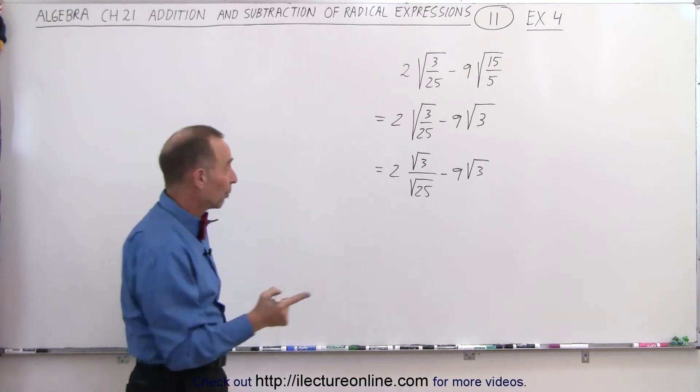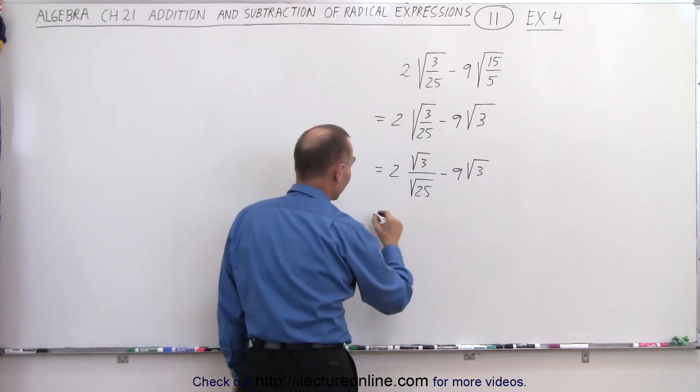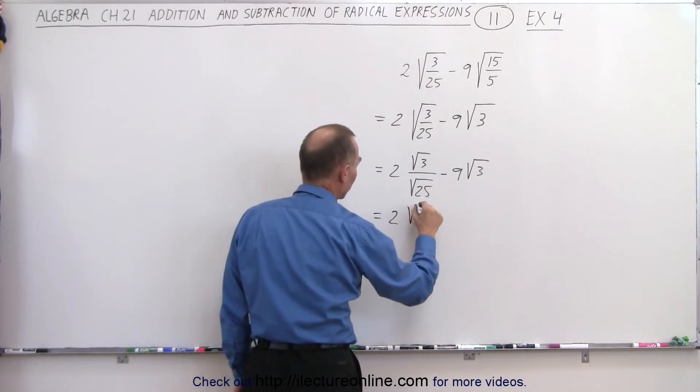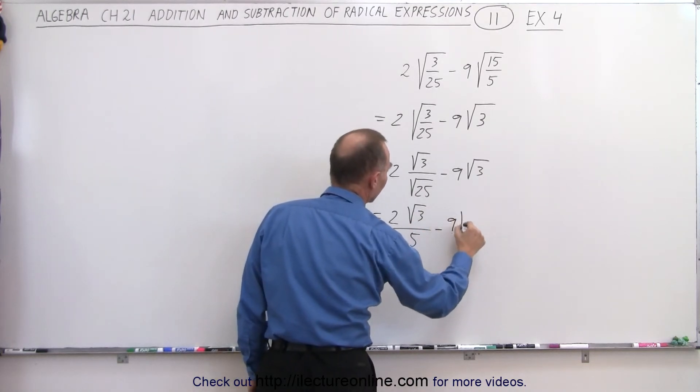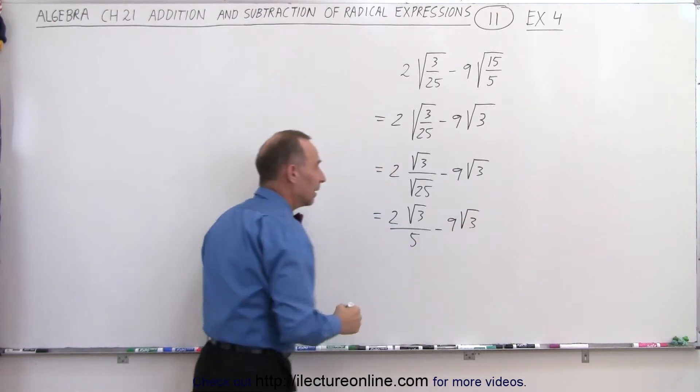And then you realize, well, √25 is simply 5, so this equals 2√3 divided by 5. In this case, we have minus 9√3. And now you say, well, they're alike.